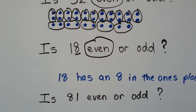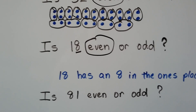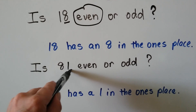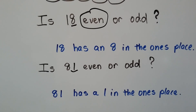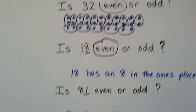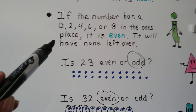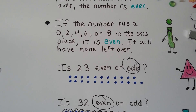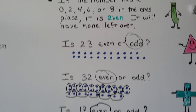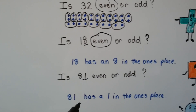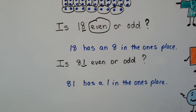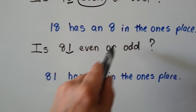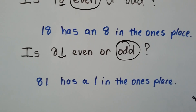Is 81 even or odd? 81 has a 1 in the ones place. If the number has a 0, 2, 4, 6, or 8 in the ones place, it's even. Well, 81 has a 1 in the ones place — that's not a 0, 2, 4, 6, or 8 — so 81 is odd.